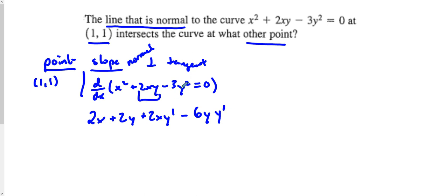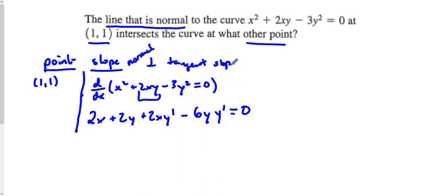Make sure you use the chain rule: take the derivative of the outside, which is 2 times 3, which is 6y. The derivative of 0 is 0. From here we're going to find our tangent slope. We're going to plug in our point (1, 1) — so x = 1 and y = 1.